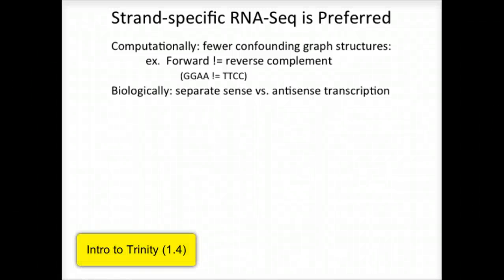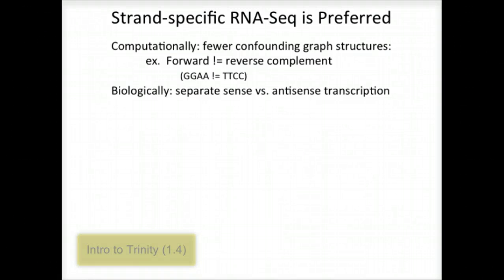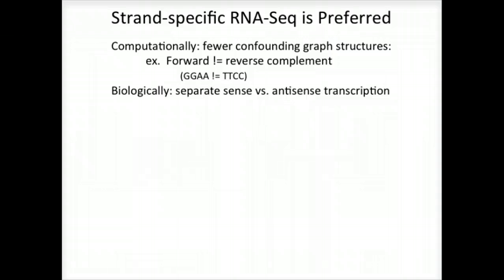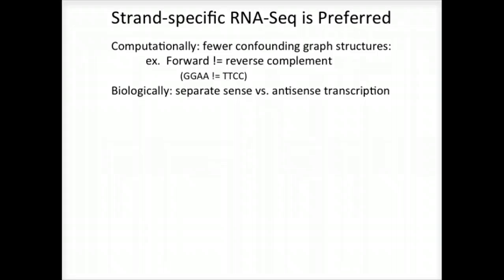Although Trinity doesn't absolutely require it, strand-specific RNA-seq is the preferred substrate for transcriptome assembly. Computationally, there are fewer confounding graph structures, since the forward k-mers and reverse complement k-mers are treated as distinct. Biologically, it's important because it allows for the separation of sense and anti-sense transcription.